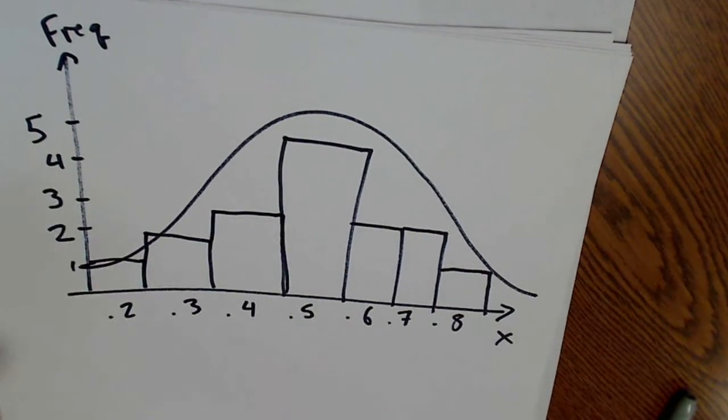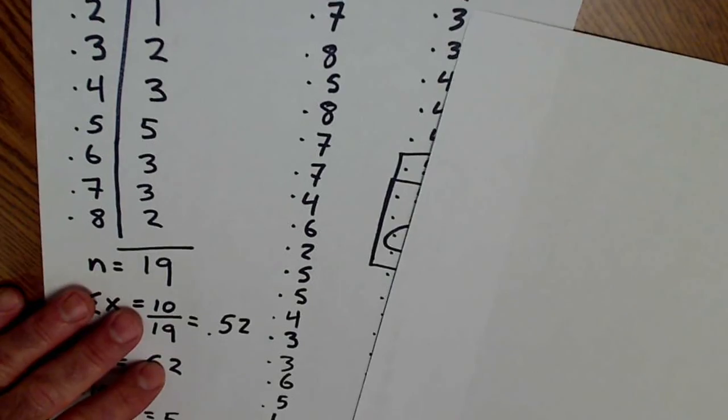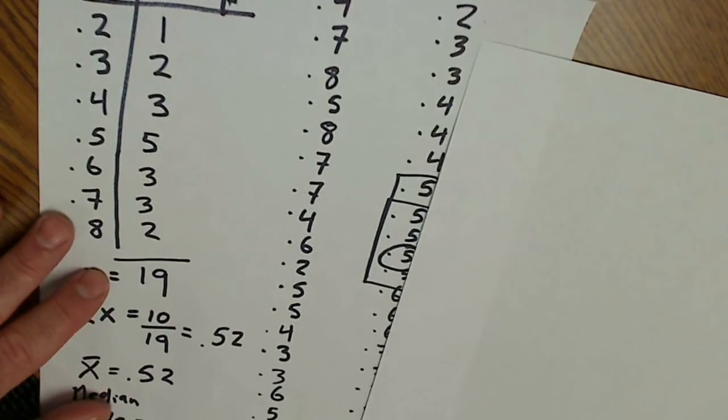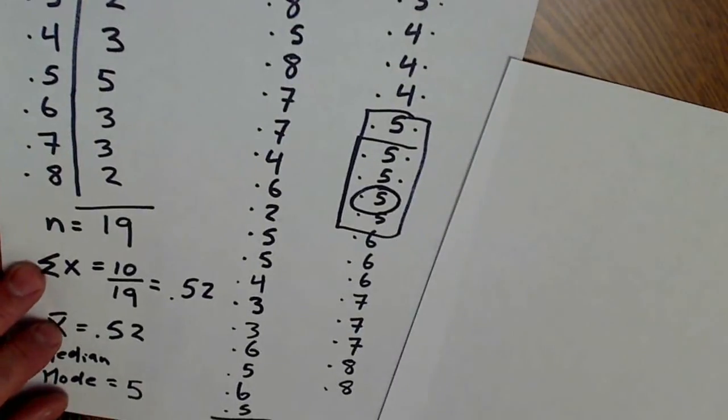So the first three stats, again, are mean, median, mode. And then once you do that, frequency distribution right here, calculating the mean, the median, and the mode.